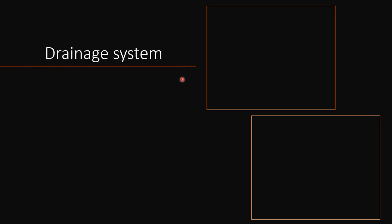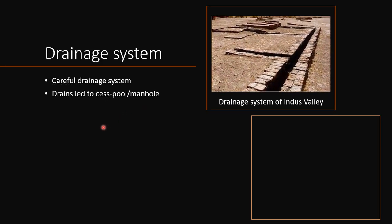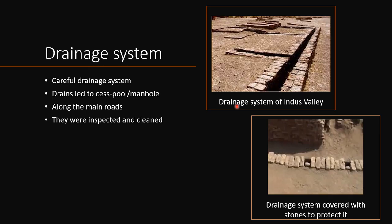The drainage system of the Indus Valley Civilization was very, very popular and is very famous. It was a carefully laid-out drainage system. The drains led to a cesspool or manhole, and were kept along the main roads. They were inspected and cleaned regularly, and were covered with stones to protect them.